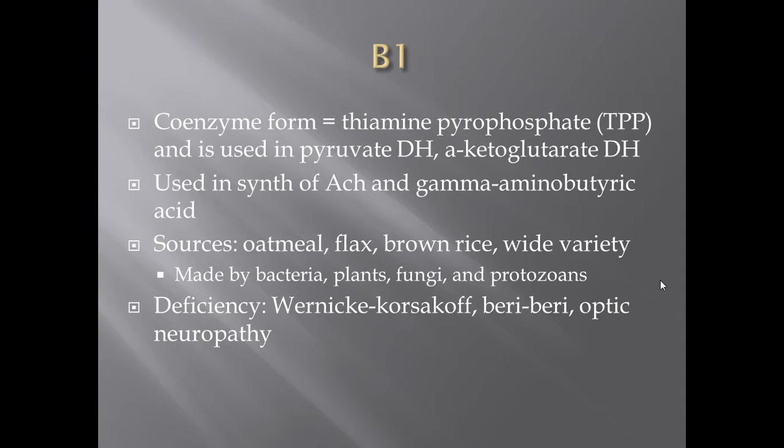The third thiamine deficiency condition is Leber's optic neuropathy, which causes blindness. Your optic nerve needs myelination, and to myelinate that nerve requires a lot of ATP. To create that ATP you rely on pyruvate dehydrogenase and alpha-ketoglutarate dehydrogenase. If those energy-producing enzymes don't work due to thiamine deficiency, you won't have enough ATP, which interferes with myelination and ultimately your ability to see — hence optic neuropathy.